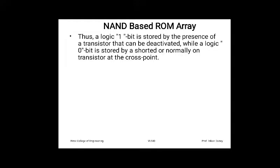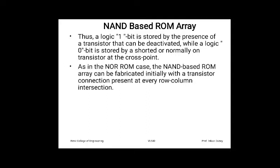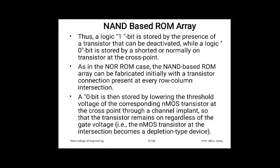A logic 1 bit is stored by the presence of a transistor, while in the NOR based case logic 1 is stored by the absence of an active transistor. A logic 0 bit is stored by shorting a normally-ON transistor at the cross point. As in the NOR ROM case, the NAND ROM array can also be fabricated initially with transistor connections present at every row-column intersection.